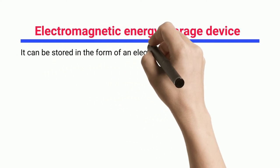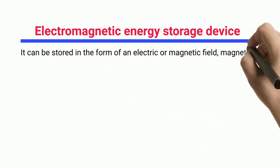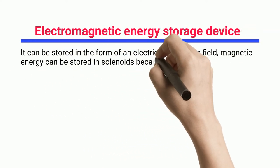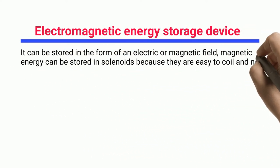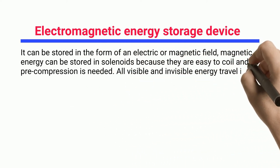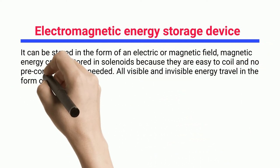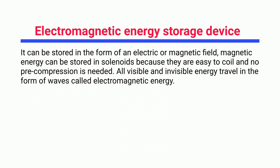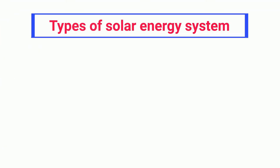Electromagnetic energy storage: energy can be stored in the form of an electric or magnetic field. Magnetic energy can be stored in solenoids because they are easy to coil and no pre-compression is needed. All visible and invisible energy travels in the form of waves, called electromagnetic energy.